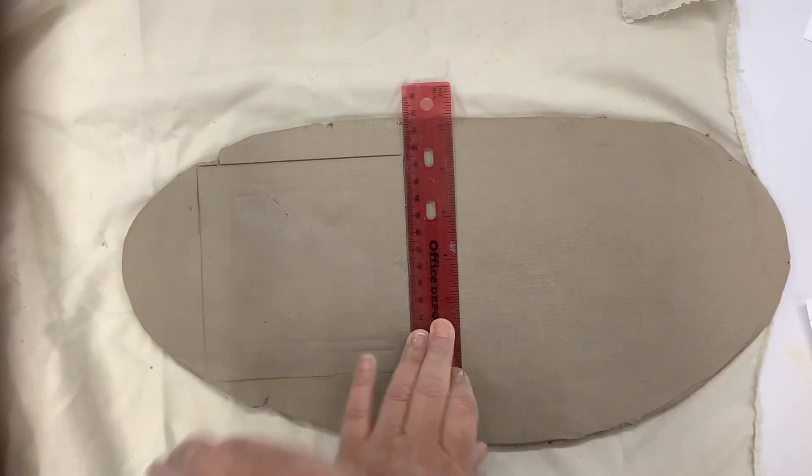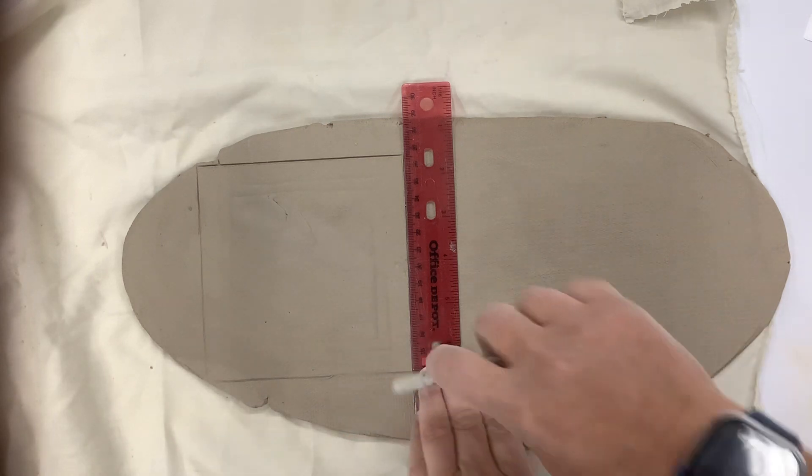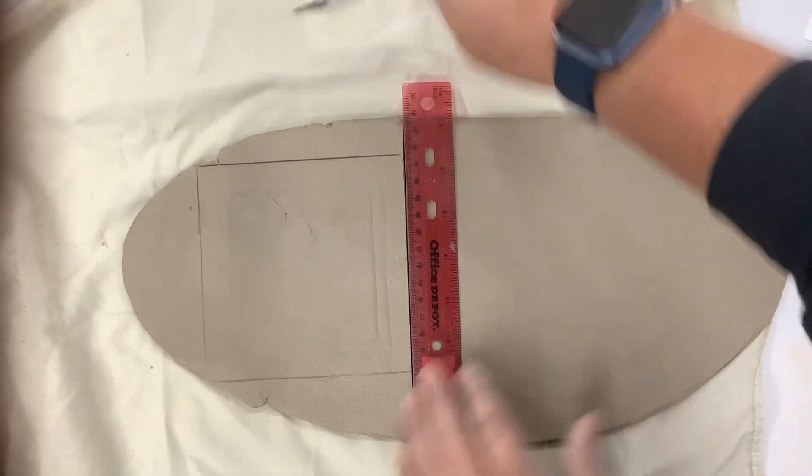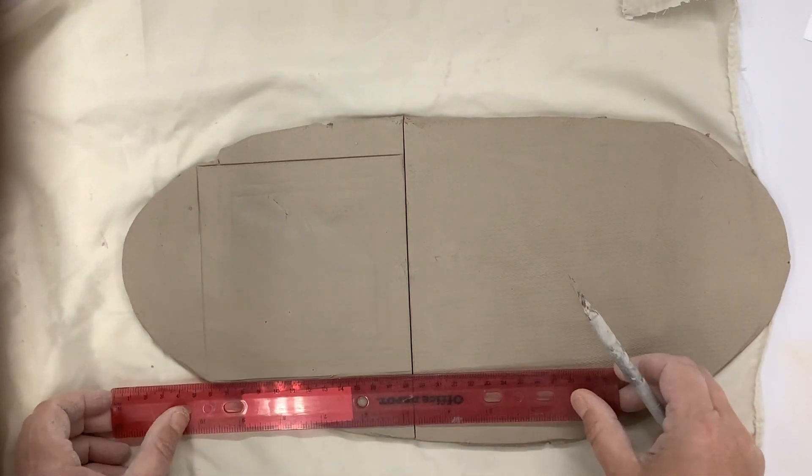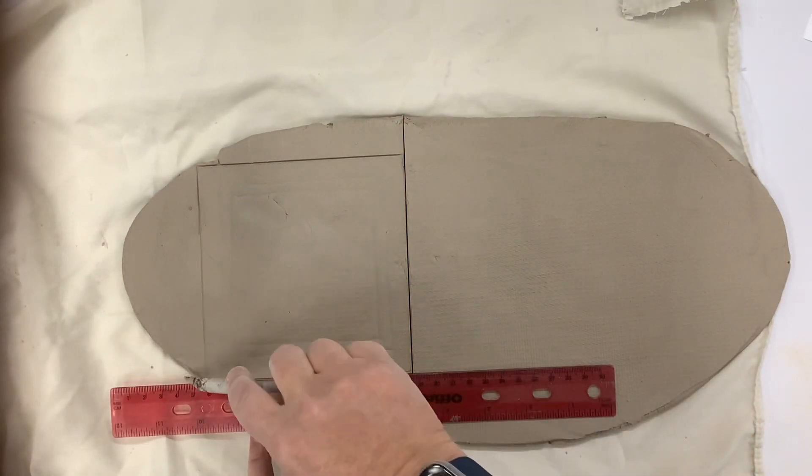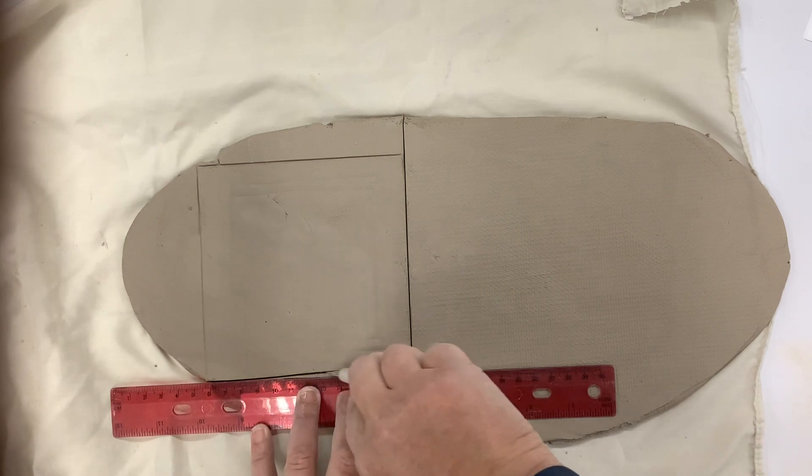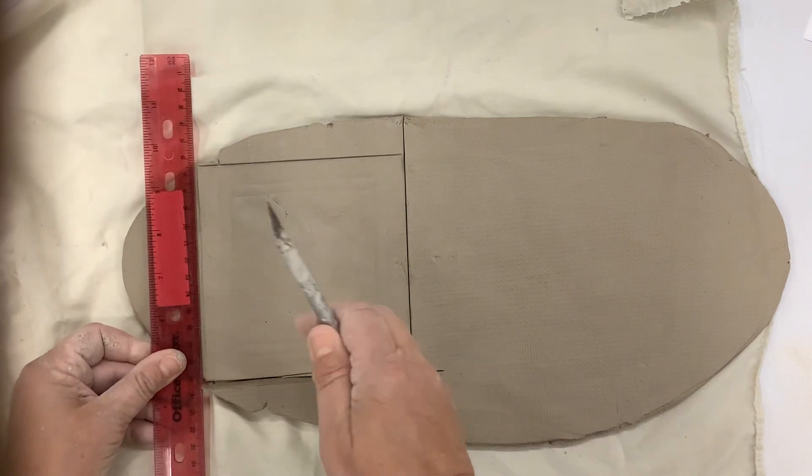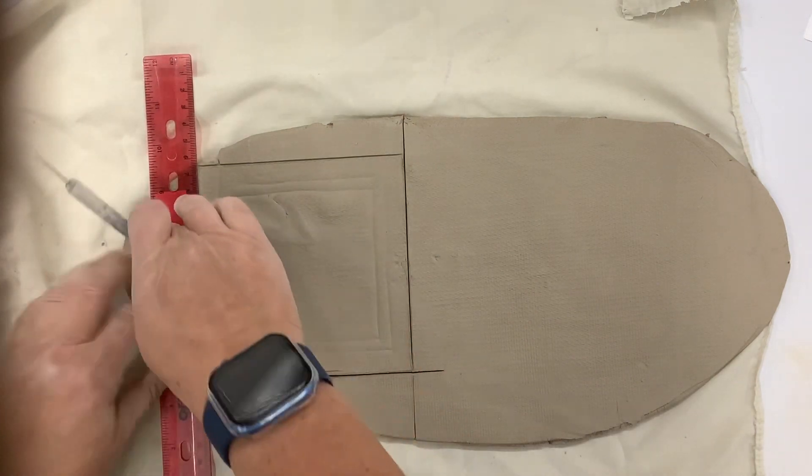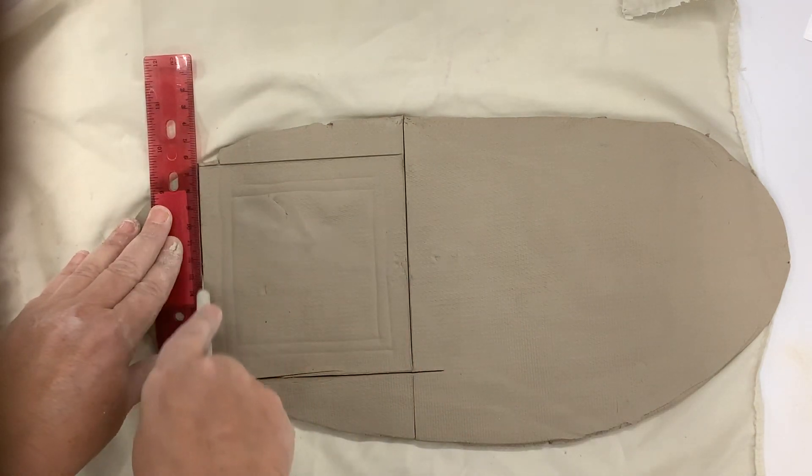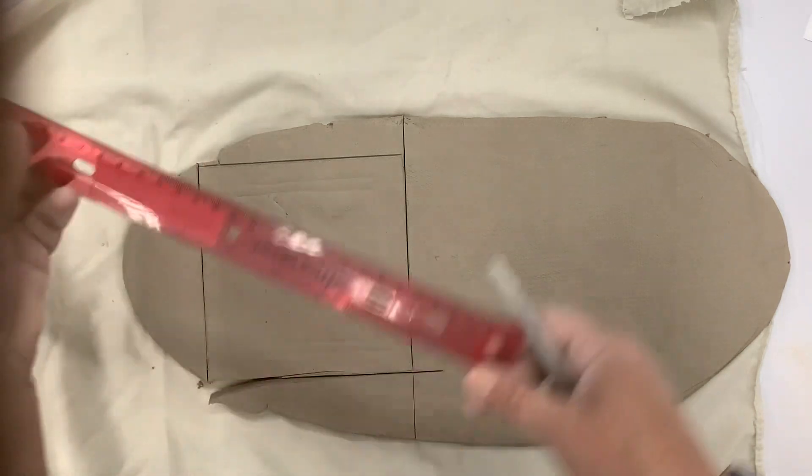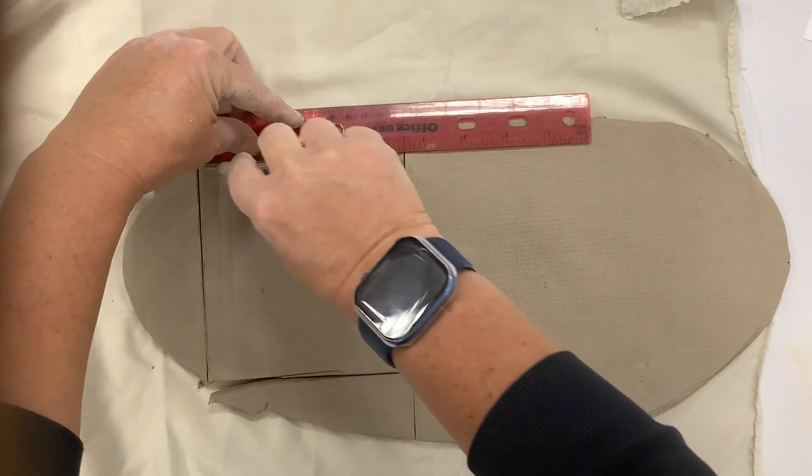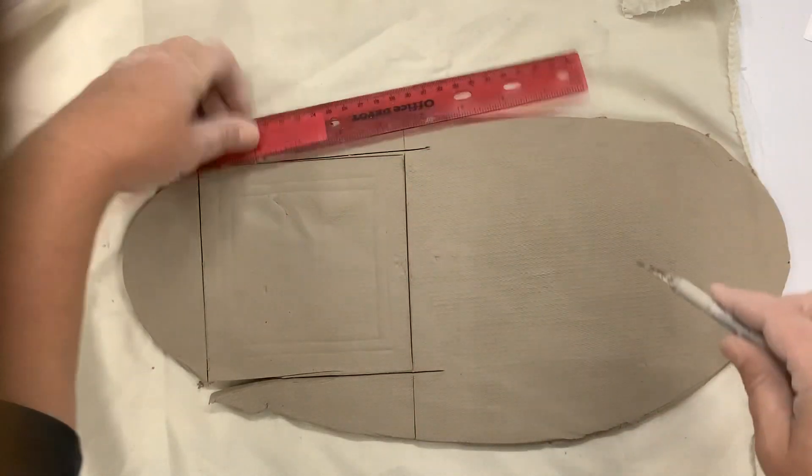Then I'm going to use my ruler and exacto knife to cut this all the way through. I want to use a ruler so I can cut a nice line. Use your ruler for this because you don't want to end up with what I had down there.